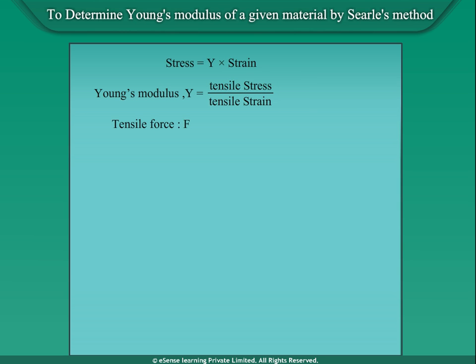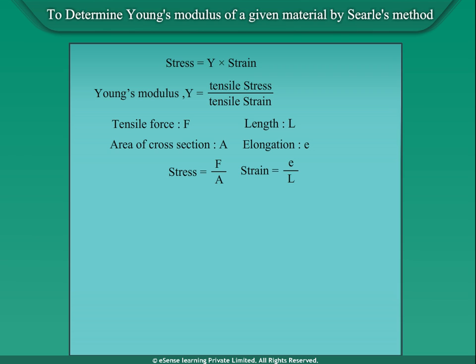If a tensile force F acting on a wire of length L and area of cross-section A produces an elongation E, then longitudinal stress is equal to F upon A. Longitudinal strain is equal to E upon L. Therefore, Young's Modulus Y is equal to F upon A divided by E upon L, which equals F upon A into L upon E, and this is equal to FL upon AE.